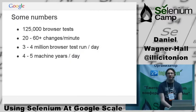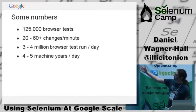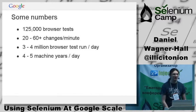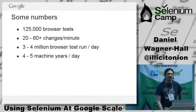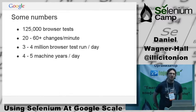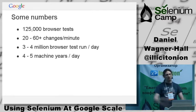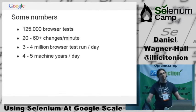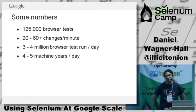Today I'm talking about using Selenium at Google Scale. We use Selenium a lot at Google — we wholeheartedly believe in automated testing. Google Scale is pretty huge: we have about 125,000 different browser tests across the company, at least 20 changes per minute going into our code base, and at peaks 60, 70, 80 changes a minute — more than a change a second. We run every test affected by a change every time there's a change. We start three to four million browsers a day for tests, and we do about five machine years of testing just with browsers each day.